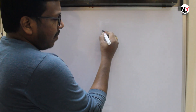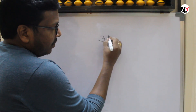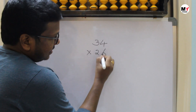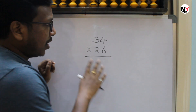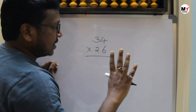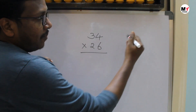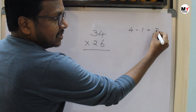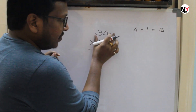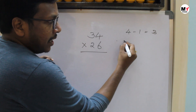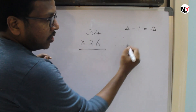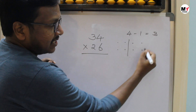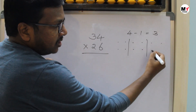2 digits into 2 digits — we'll take 34 multiplied by 26. Total how many digits we have here? 4 digits. So total 4 digits minus 1, that is 3 steps, we are going to get the answer. What are the 3 steps? Instead of this number I'm going to take a dot. So 2 digits into 2 digits: first step, second step, and third step.